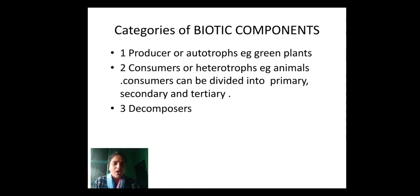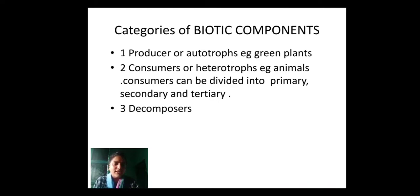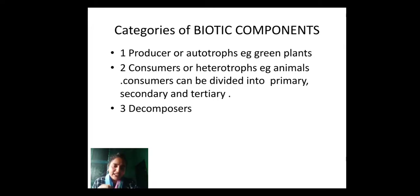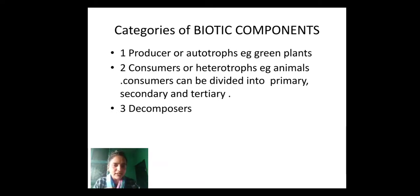Next, we have decomposers. Decomposers are microorganisms — especially microorganisms like bacteria — present in air, water, and land. What is the role of decomposers in the ecosystem? They decompose — they break down — the dead remains of plants and animals in the environment, and give back to the environment the nutrients present in those plants and animals. So decomposers help in recycling the nutrients present in dead remains of plants and animals.